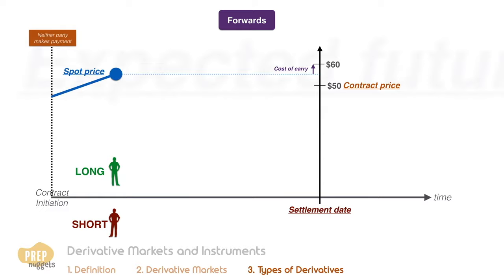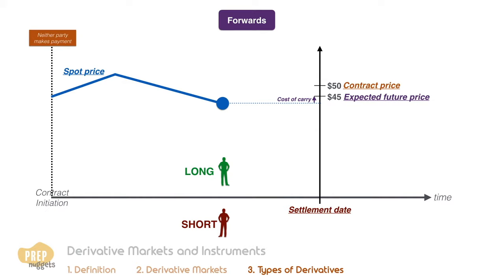Over the life of the contract, if the spot price rises such that the expected future price is above the contract price, the long will have a positive value while the short will have an equal negative value. Conversely, if the spot price goes down such that the expected future price is below the contract price, the short will have a positive value while the long will have an equal negative value.